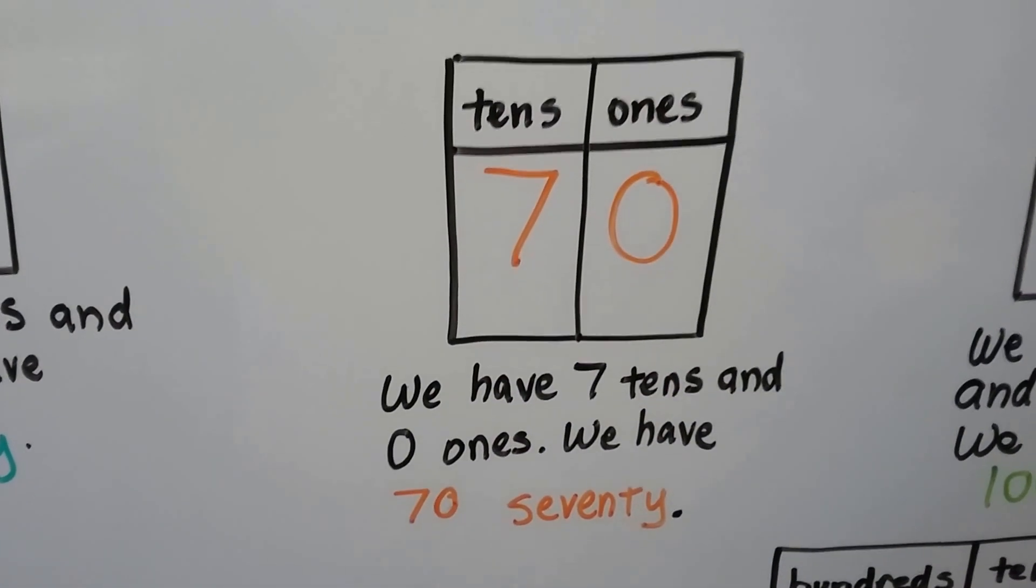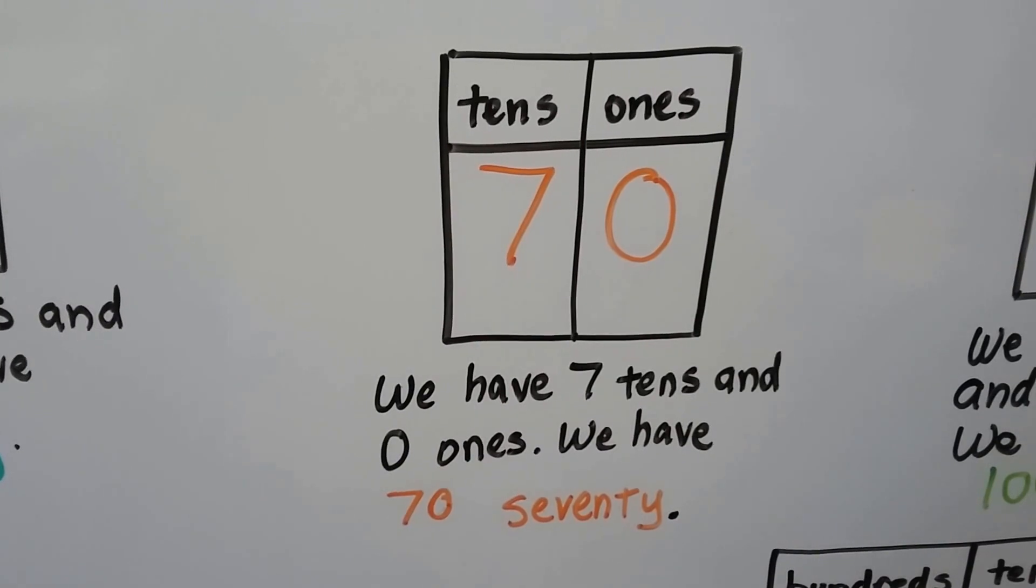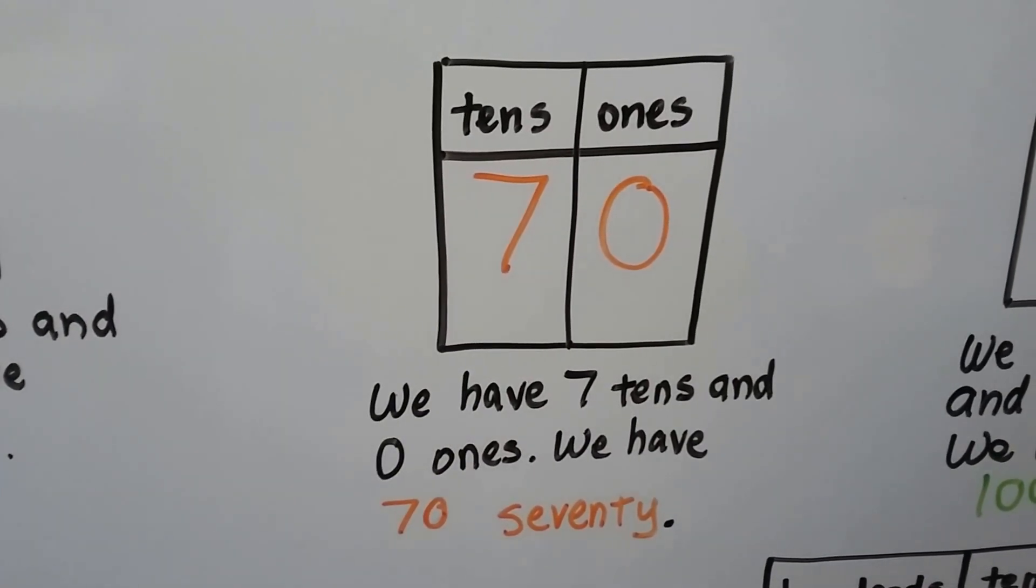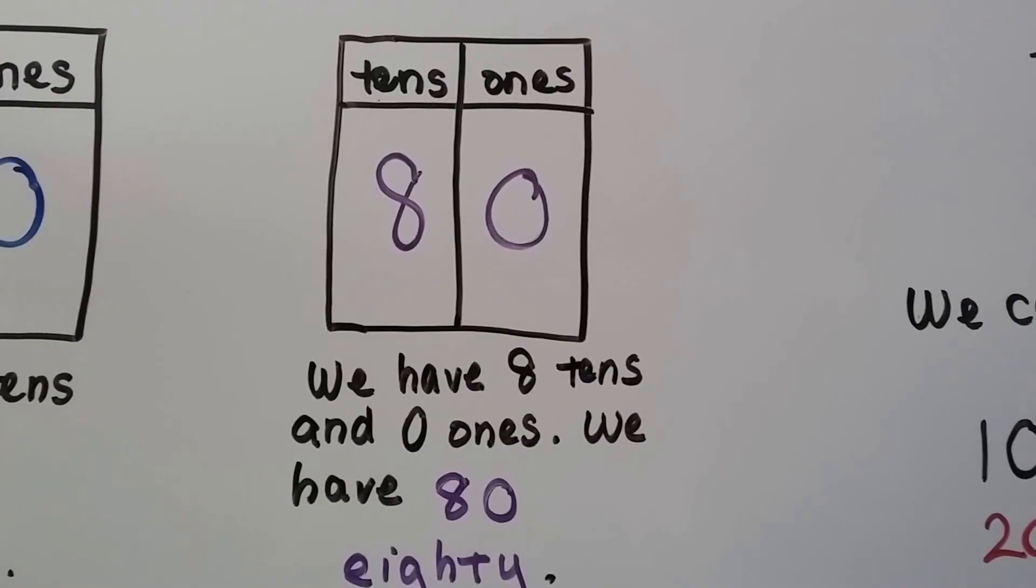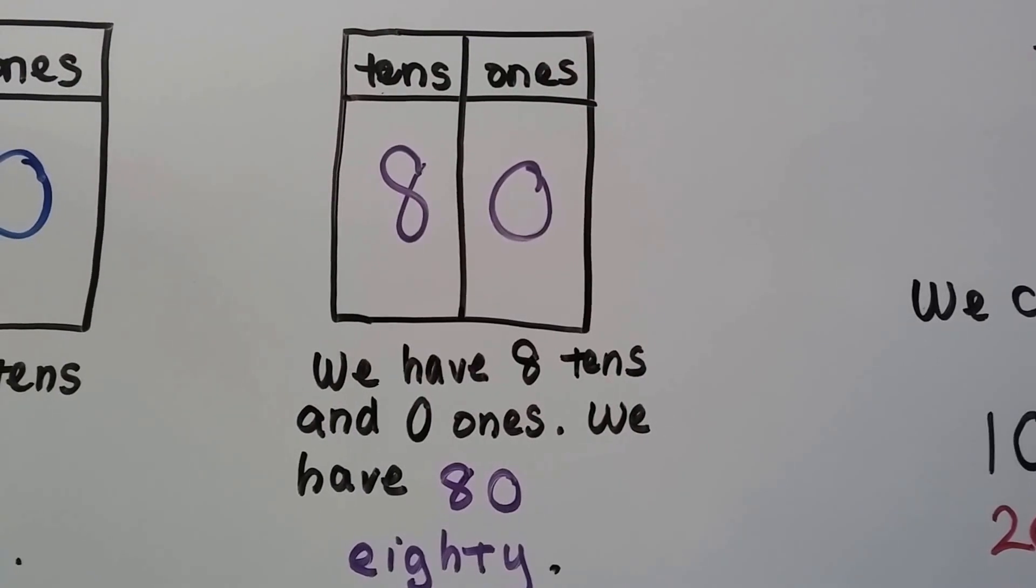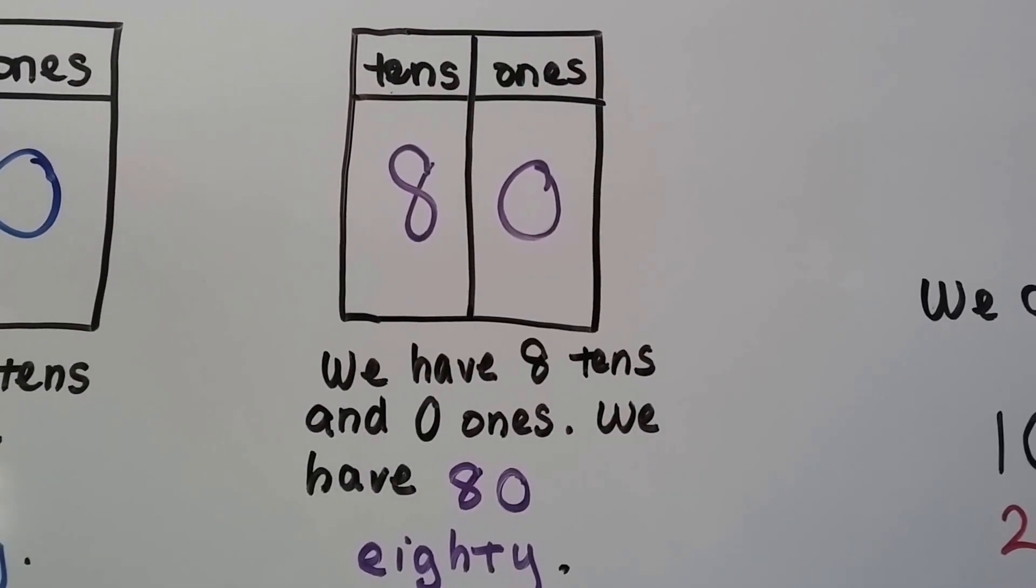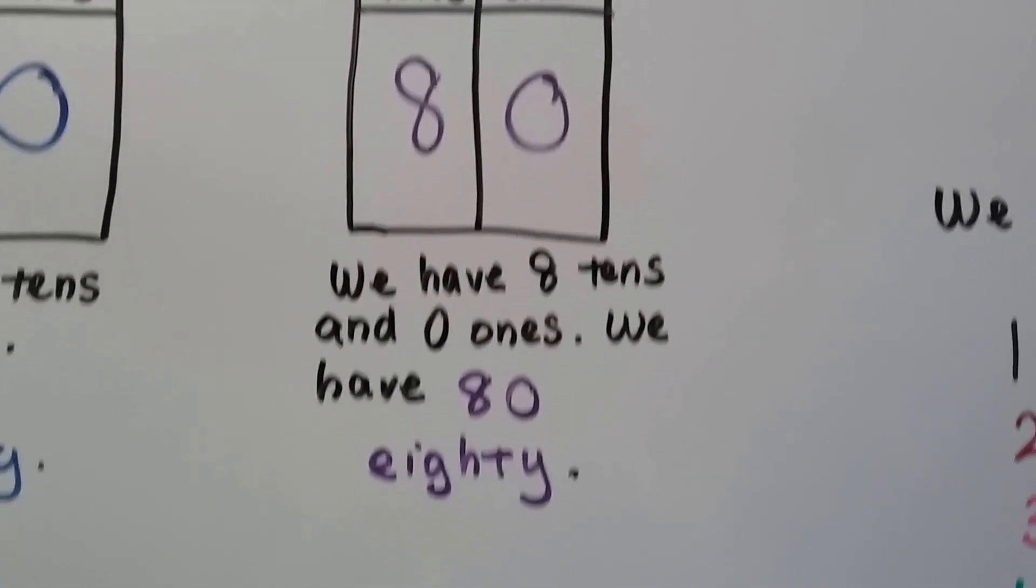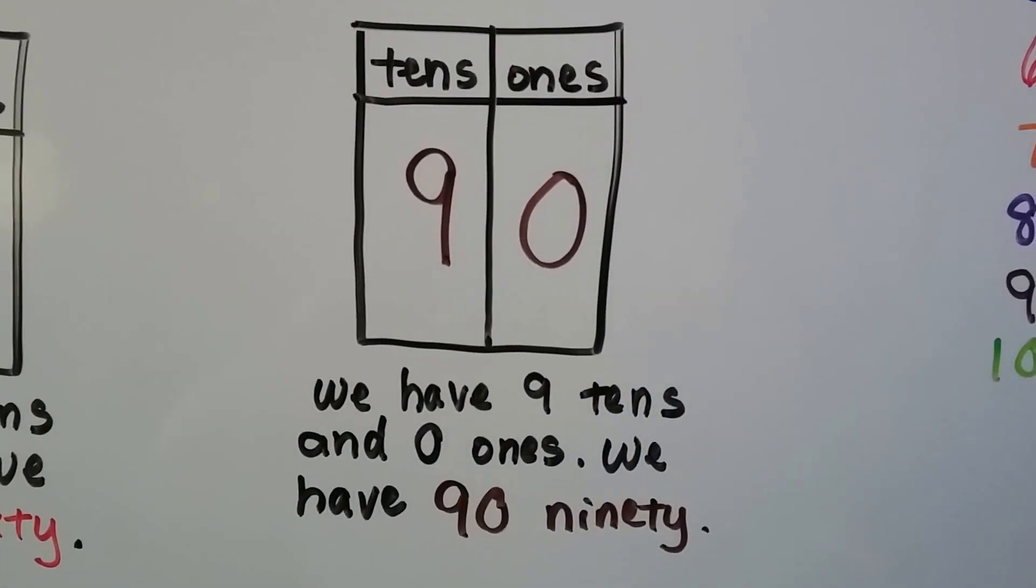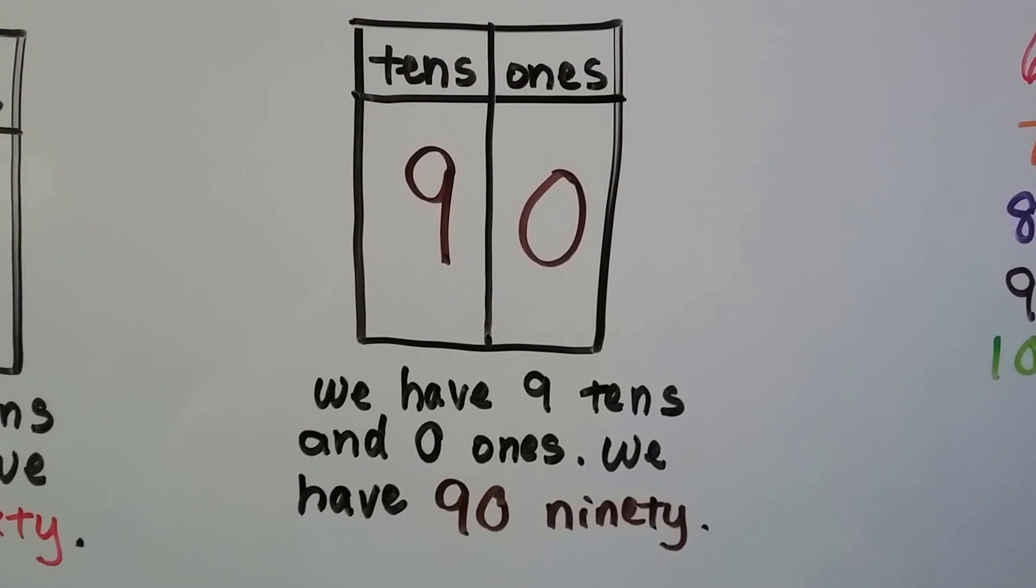We have seven tens and zero ones. We have seventy. We have eight tens and zero ones. We have eighty. We have nine tens and zero ones. We have ninety.